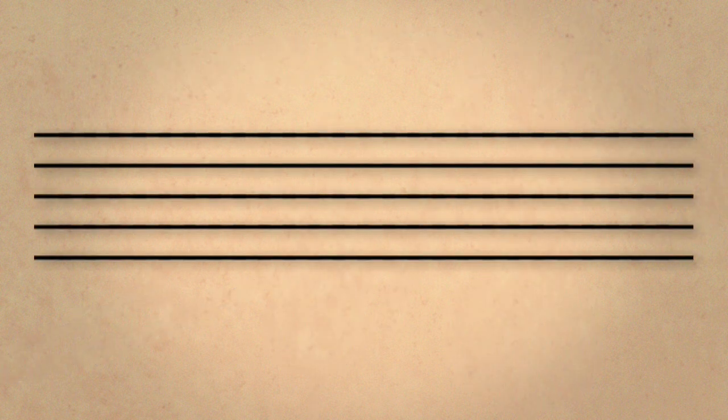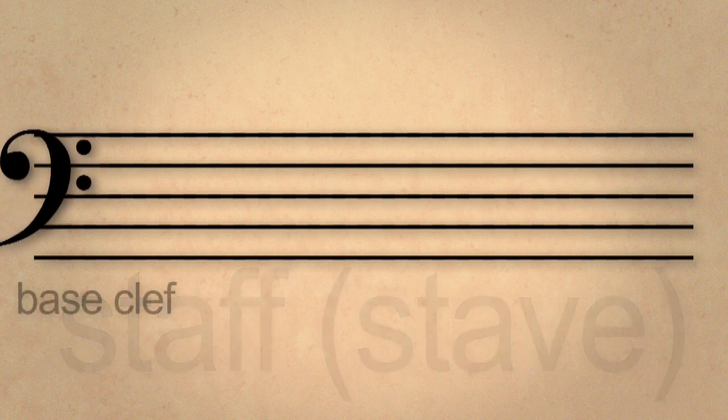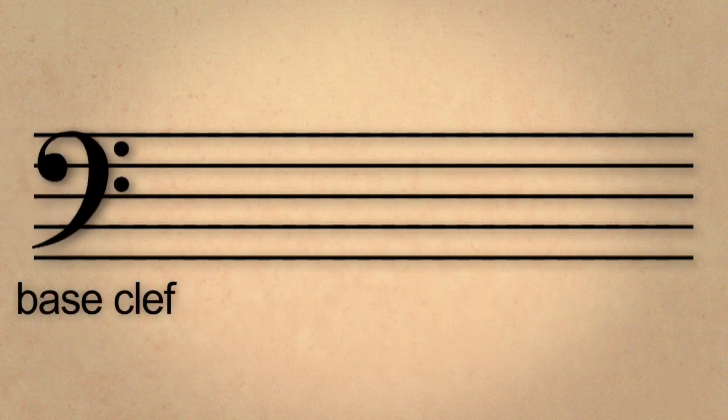First we begin with the five horizontal lines of the staff, and then add the bass clef to the beginning of that staff.